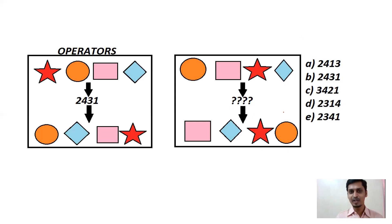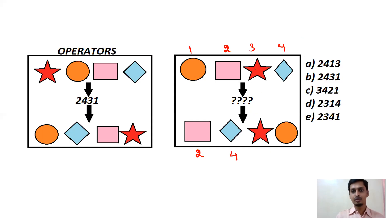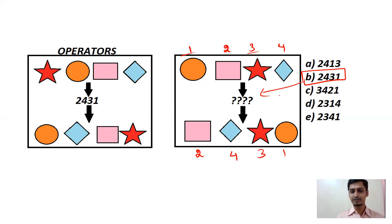Write 1, 2, 3, 4. You have rectangle (2), rhombus (4), star (3), and circle (1). So the answer is 2, 4, 3, 1 — option B.